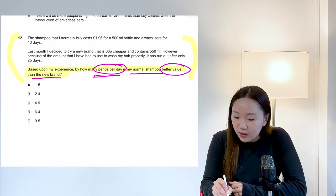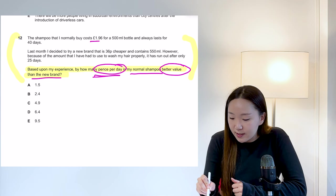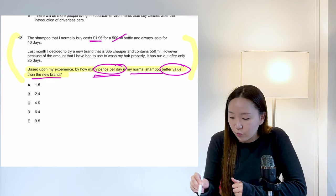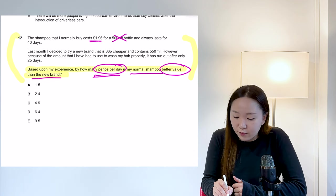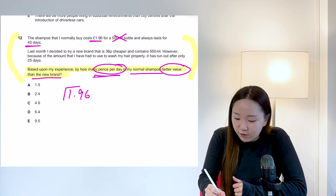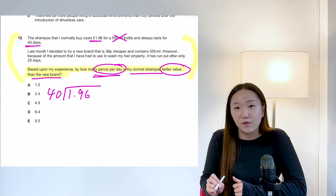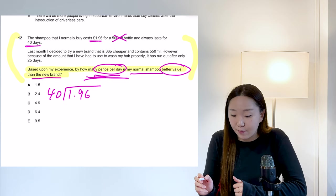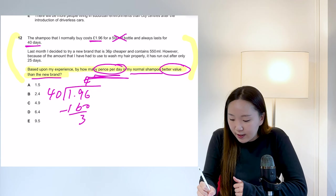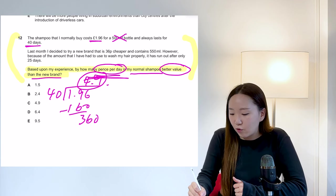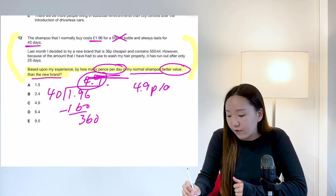So pence per day, so when we start reading through, the shampoo I normally buy costs £1.96 for a 500ml bottle. We know that that's not particularly useful information, that 500ml bit and it lasts for 40 days. So already we can tell we need to basically divide through 196 by the 40 days to find a pence per day price. So we can just do that quickly first and find that it's 4.9 pence per day for the first bottle.